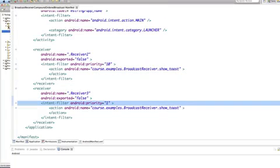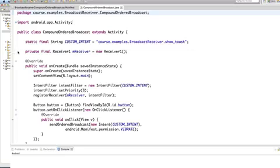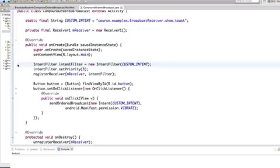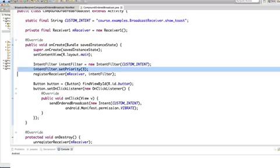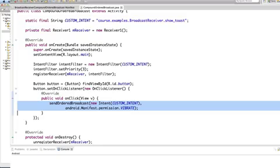Now back in the main activity, the code creates an instance of Receiver 1, then creates an intent filter for the ShowToast intent, and then sets the priority to 3. So Receiver 2 instance has priority 10, this Receiver 1 instance has priority 3, and Receiver 3 instance has priority 1. Now when the Broadcast Intent button is pressed, the listener calls SendOrderedBroadcast, passing in a new ShowToast Intent. This intent is first received by a Receiver 2 instance, and then by a Receiver 1 instance that was created in this file.